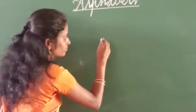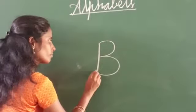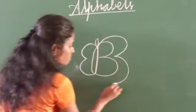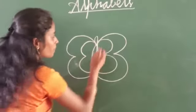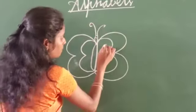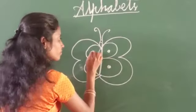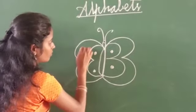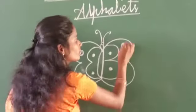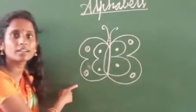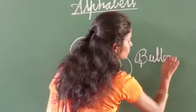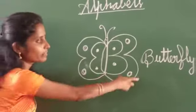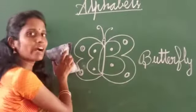B. This is butterfly. This is butterfly. It has many colors. It has many colors. This is butterfly. It has many colors. Next we go to alphabet C.